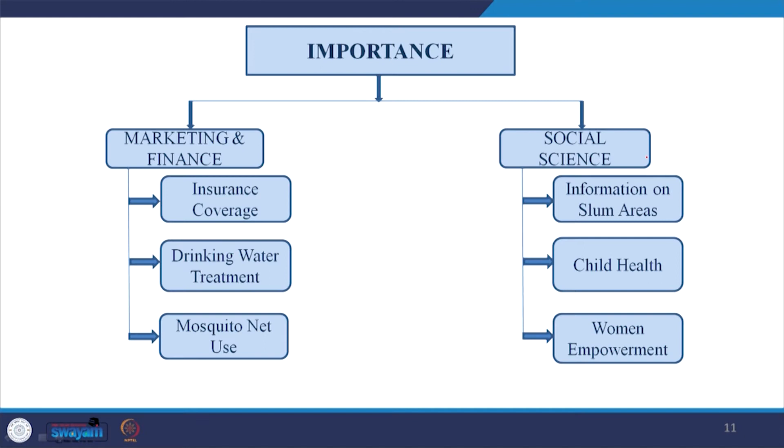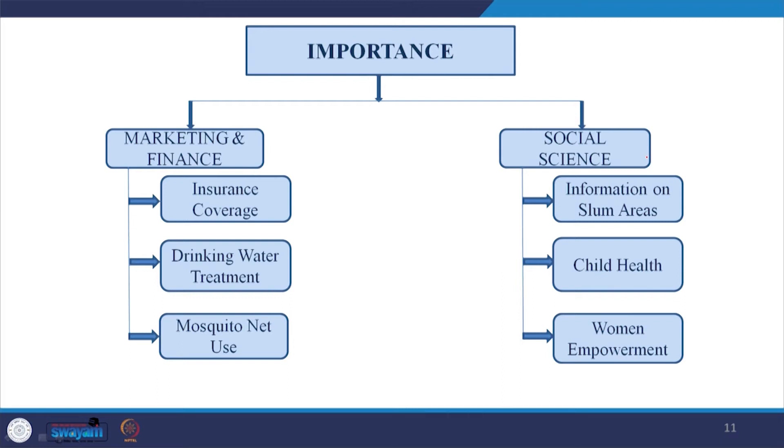If anybody is interested in research in the area of marketing and finance, this data can also be useful — for example, insurance coverage is given: how many persons are insured and which are the sources of insurance, whether private, public, or community health insurance, which is very difficult to tap. Drinking water and treatment information is also available. How much out-of-pocket expenditure is actually borne by the individual can also be calculated. Even morbidity profiles are clearly given in the database.